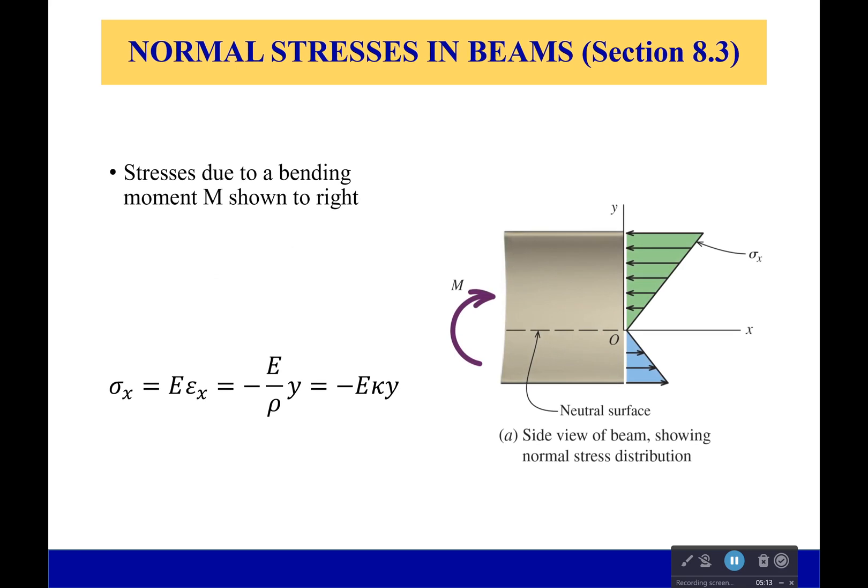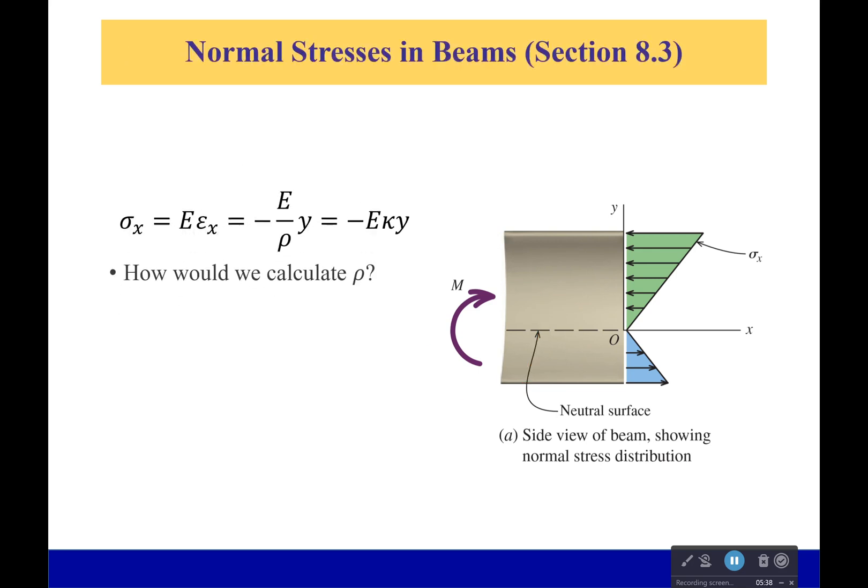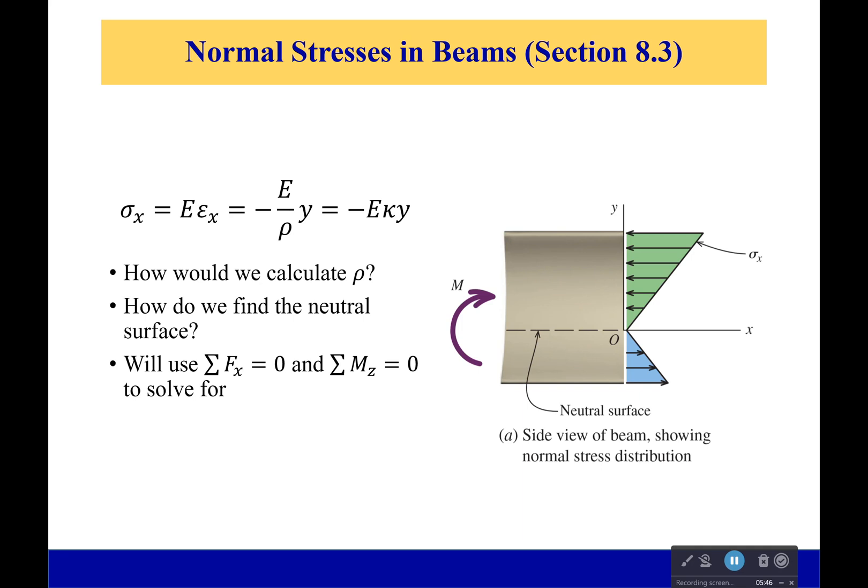We're going to need to determine a better method of looking at this because we know where these stresses come from—they come from that bending moment. That deflection comes from the bending moment. So it would be better if we could determine a relationship that connects that bending moment to our stress. So what we've been saying all along is: how do we calculate the radius of curvature? How do we find the neutral surface? Well, let's look at these things.